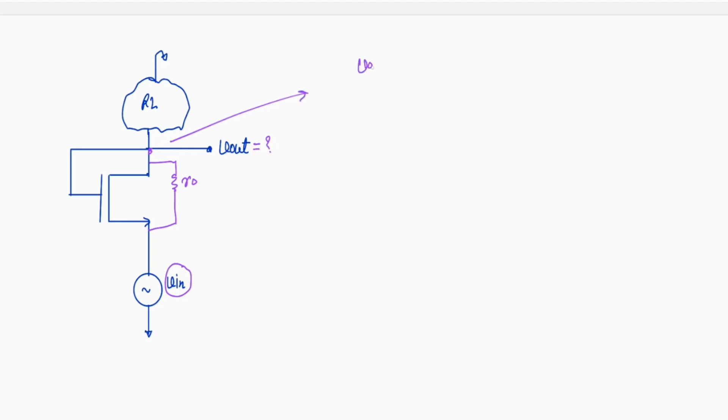So this will be Vout by RL plus Vout minus Vin by R0 plus Gm Vgs current, equal to zero. I am assuming every current is going out of the node.